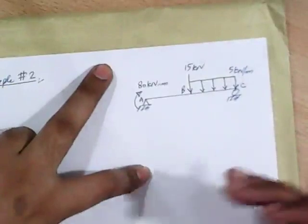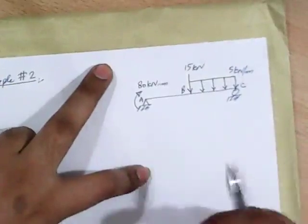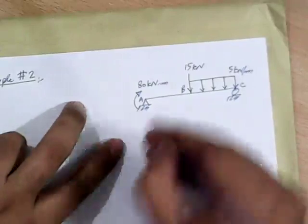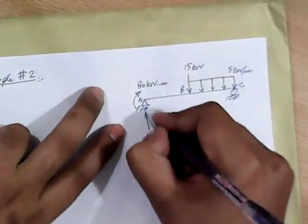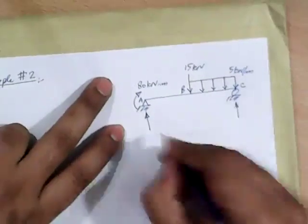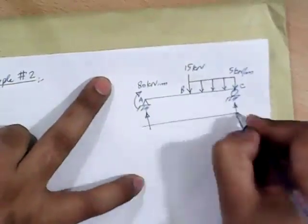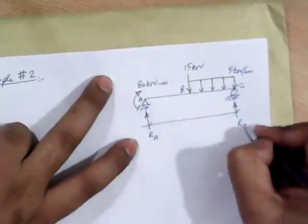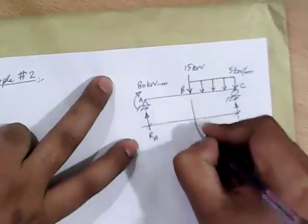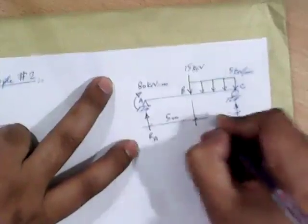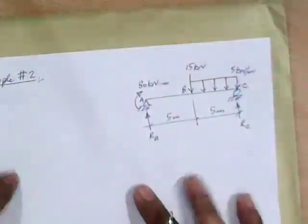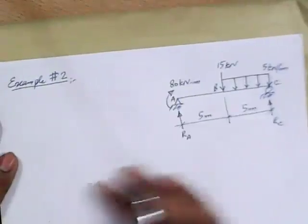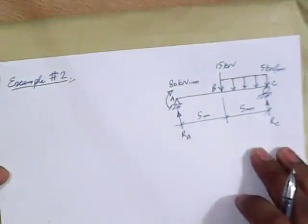The objective of this problem is to find the shear force and bending moment along the length of the beam. This beam will have two reactions. As it is a simply supported beam, we call the reactions RA and RC. We can apply the equilibrium equations, and the first step is to solve for the reactions.